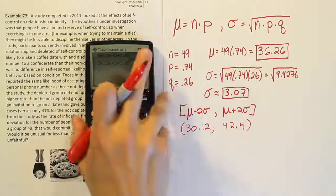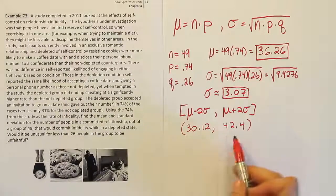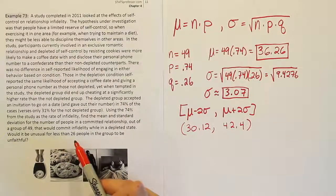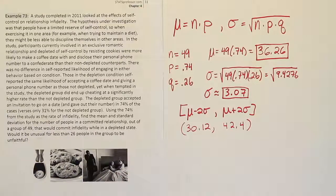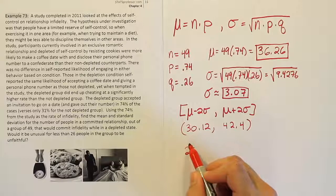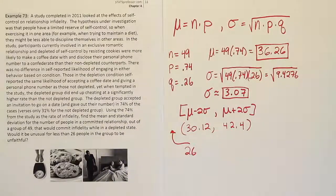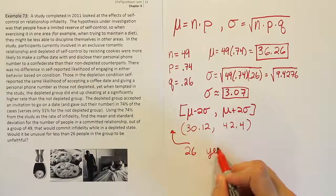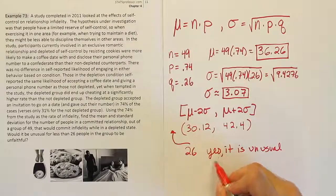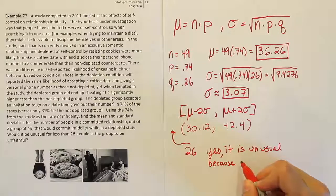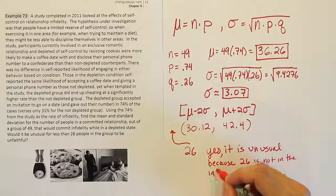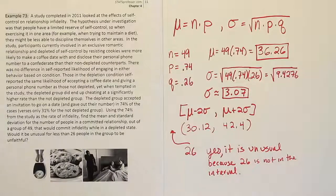Now we're saying that that interval there should capture no less than 75% of the cases. So if something's outside of that, we'll label it as unusual, let's say. So in this case, would it be unusual for less than 26 people in the group to be unfaithful? I would say yes, right? Because this lower limit is only 30. 26 is somewhere outside of that, right? So 26 falls over here. So we're going to say, yes, that would be an unusual value. So let's go ahead and say, yes, it is unusual. So it is unusual because 26 is not in the interval. Period. And that's the end of the problem.